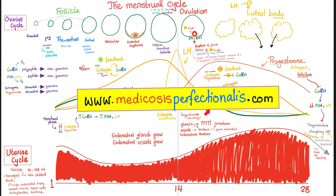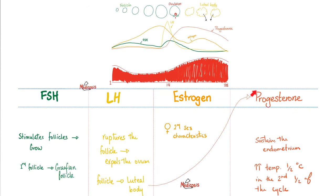What are the functions of progesterone? It sustains the endometrium — it increases the size of the glands and the tortuosity of the vessels. That's why when progesterone drops, the endometrium will slough off and drop as well. If a female is taking progesterone and then stops suddenly, breakthrough bleeding occurs, because lack of progesterone equals lack of endometrial support and the endometrium will slough off.